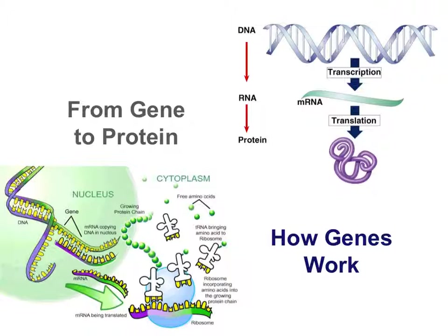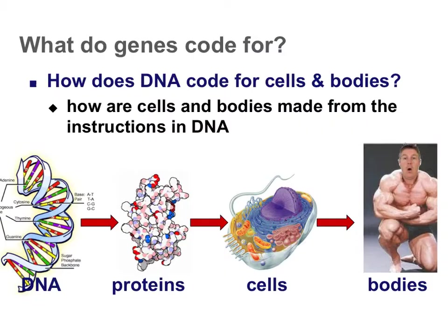Hi there. In this screencast, we're going to talk about how we get from the code in all of our genes. We all know that DNA stores the genes that make us who we are. We're going to discuss how we get from that code to a finished product — in other words, how we get to a structure that's going to lead to our phenotypes.